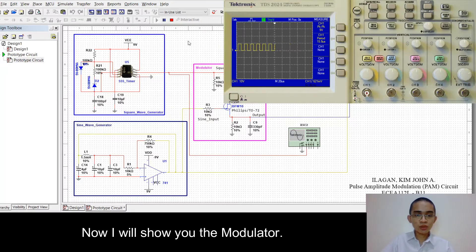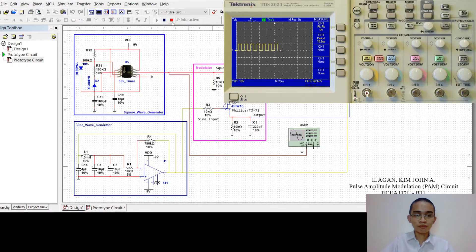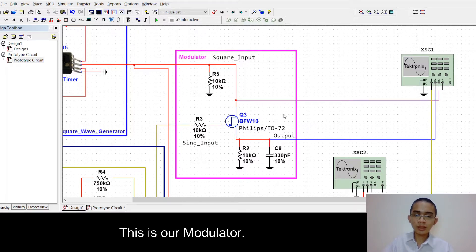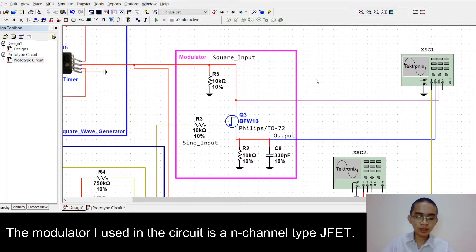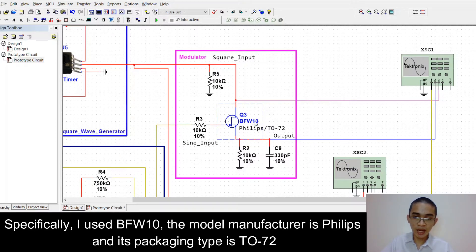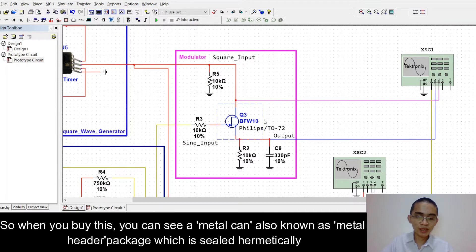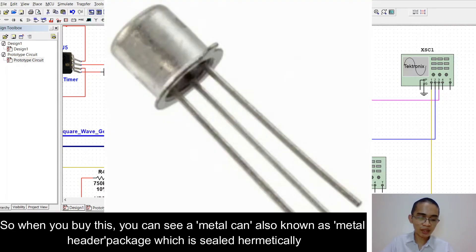Now, I will show you the modulator. This is our modulator. The modulator I use in the circuit is an N-channel type JFET. Specifically, I use BFW10. The model manufacturer is Philips and its packaging type is TO-72. So when you buy this, you can see a metal can, also known as metal header, package which is sealed hermetically.